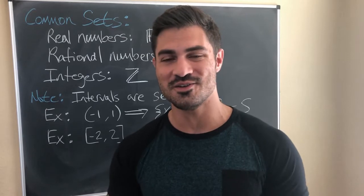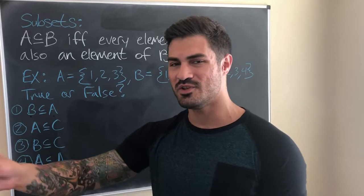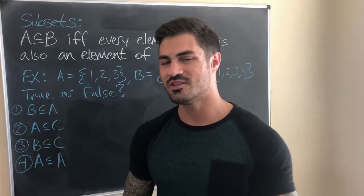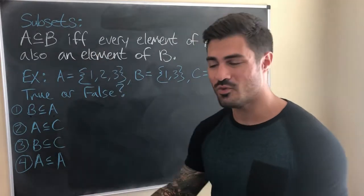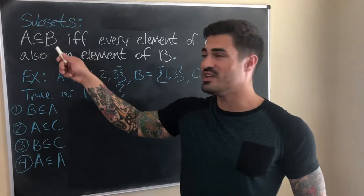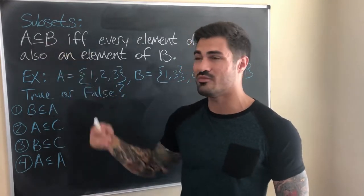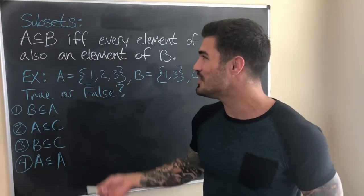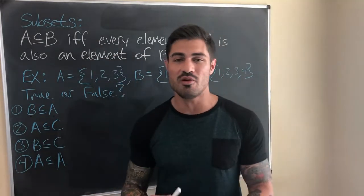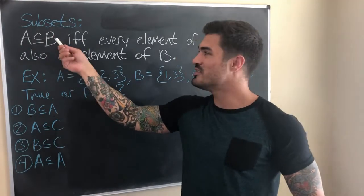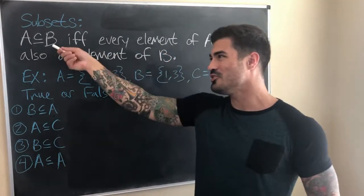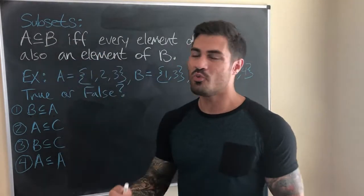Let's talk about subsets. Conceptually, I think of a subset as a set within a set. The formal definition: A is a subset of B — written A ⊆ B — if and only if every element of A is also an element of B. This 'if and only if' is a double implication: if A ⊆ B, then every element of A is in B, and if every element of A is in B, then A ⊆ B. To say A is not a subset of B, we draw a line through the ⊆ symbol.